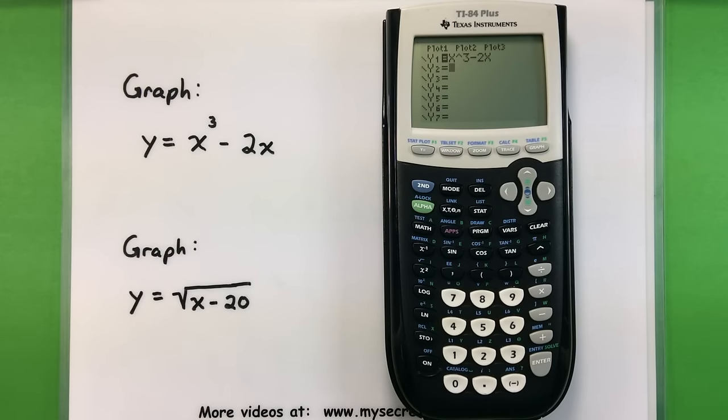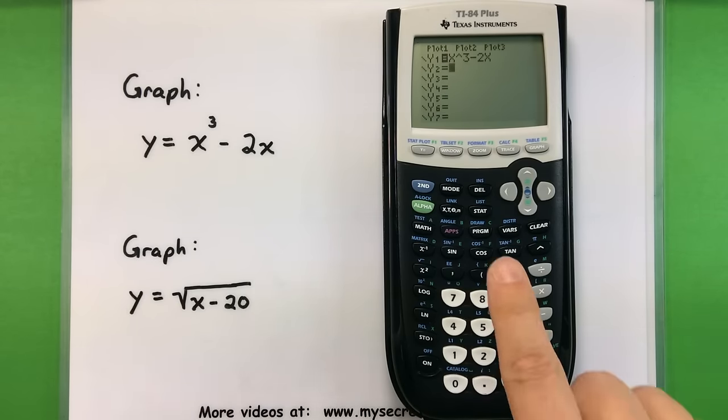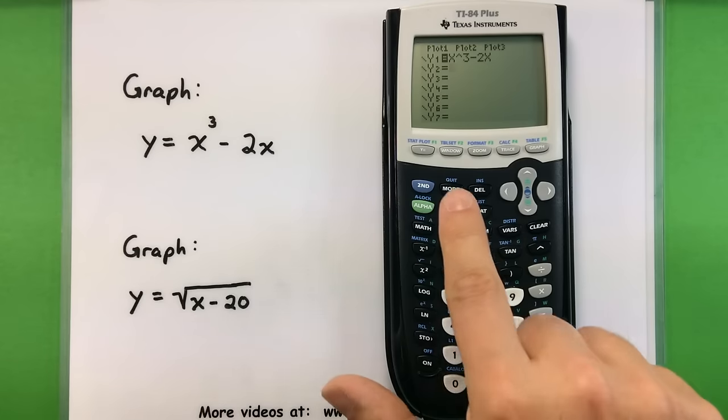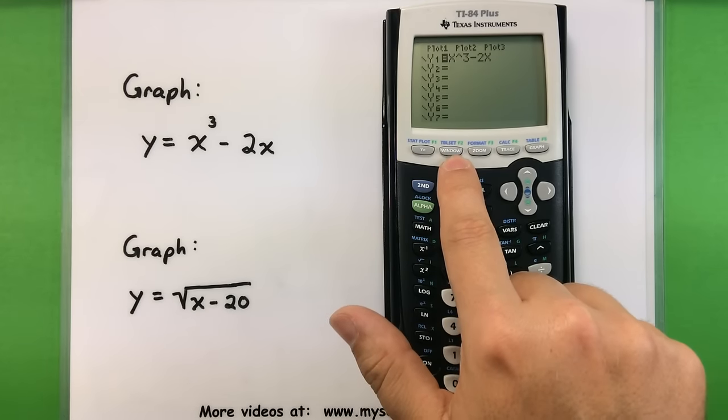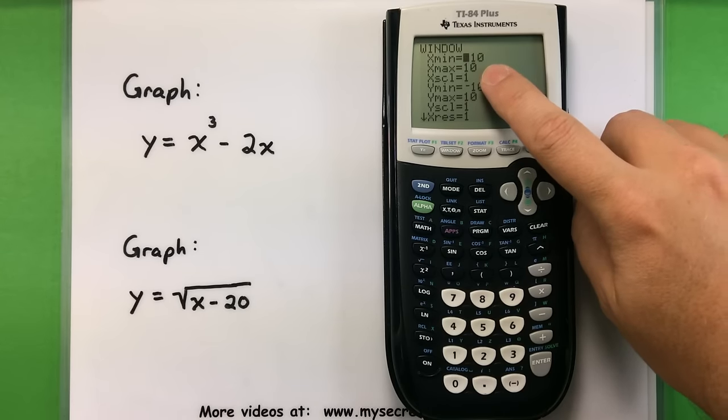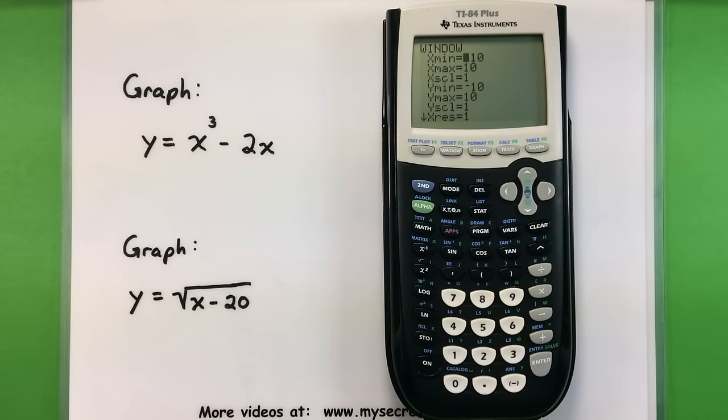Now once I have that done I need to actually see it, but I think it's a good idea to adjust your window first just to make sure that you're going to get a good picture out of this. So now that we've done the Y equals, let's do the one right next to it says window, and make some adjustments. Now usually by default it'll have the X min and X max set between negative 10 and 10, and the same thing for the Y min and the Y max, somewhere between negative 10 and 10.